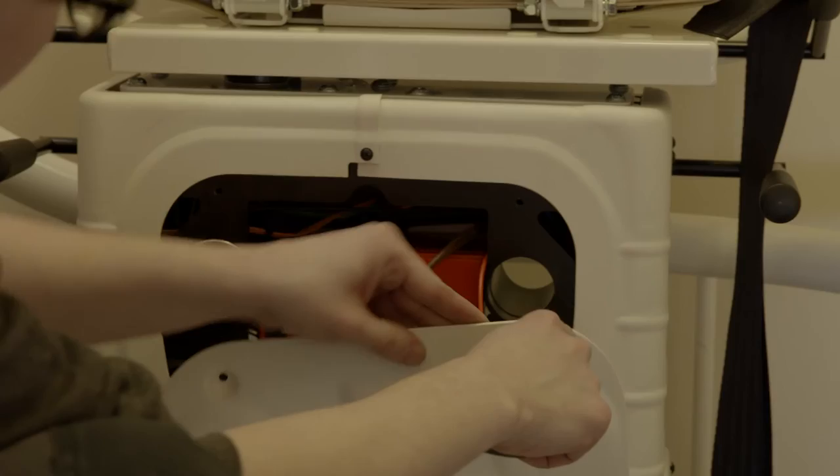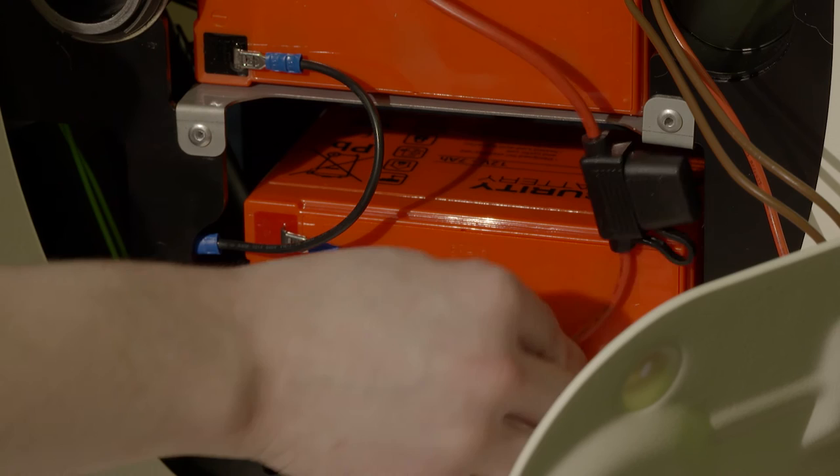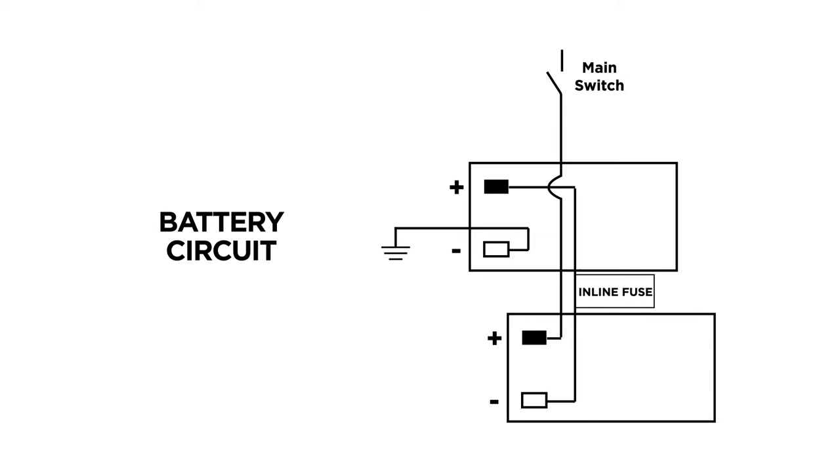To install the batteries, first remove the front panel by unscrewing the four main screws. Once you have inserted the batteries, consult your instruction manual, making sure the battery circuit is correct.